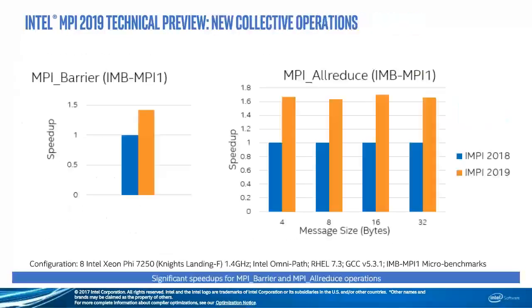Here's an example of new collective operations. The new codebase allows us to easily integrate custom solutions at the collective operation implementation level. One of the things we implemented in the technical preview is a set of direct collectives — we go directly to OFI as soon as possible. Here's an example showing new collective behavior on Xeon Phi. We see that it helps Intel Xeon as well, but the biggest benefit is on Xeon Phi. One of the biggest advantages is a minimized critical path during the collective operation, so every hop in your collective algorithm becomes more efficient.